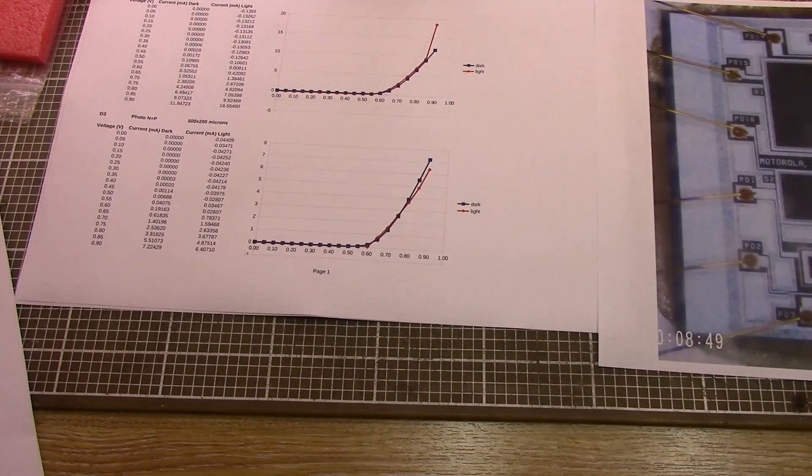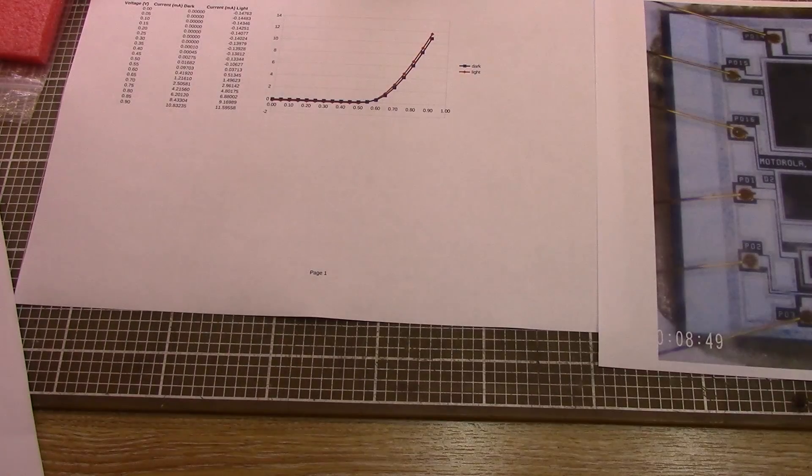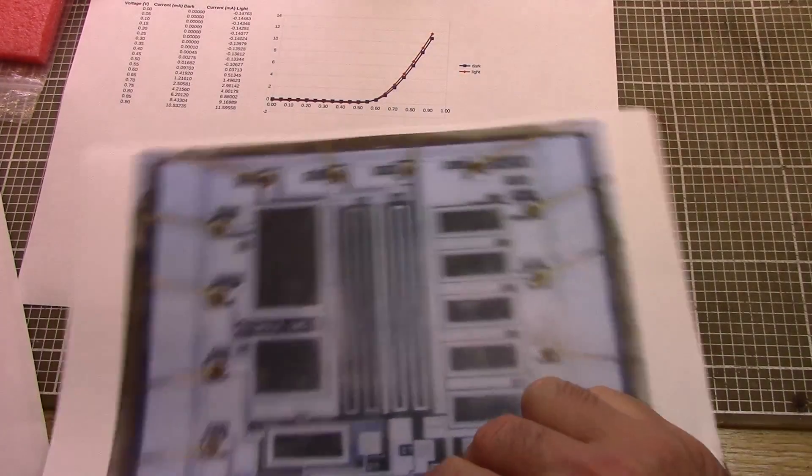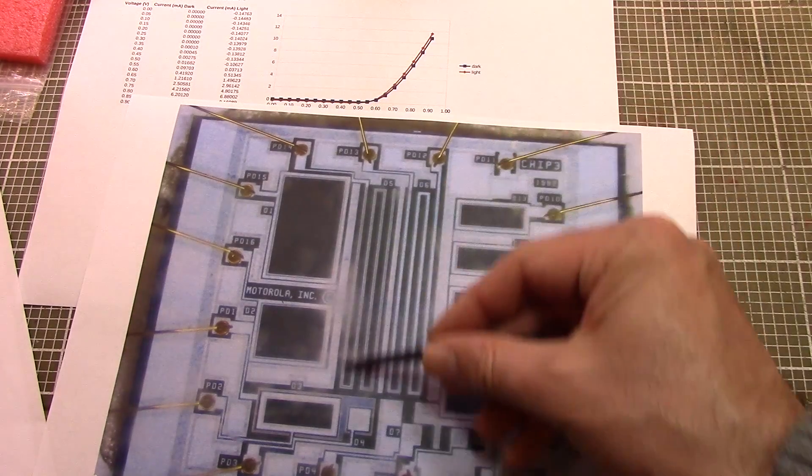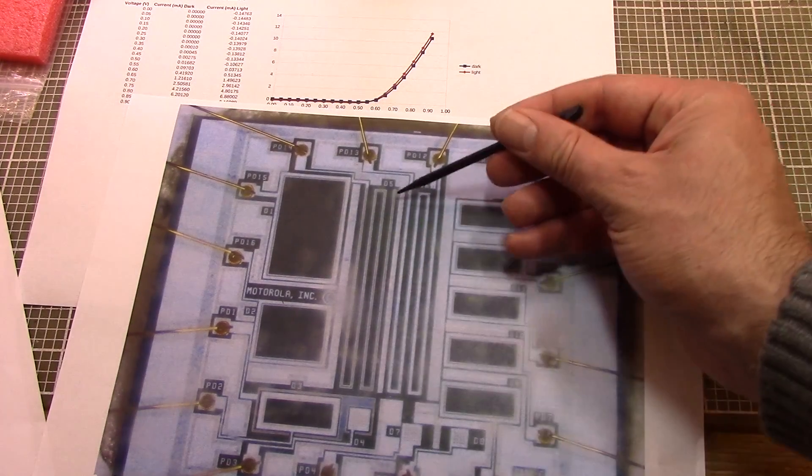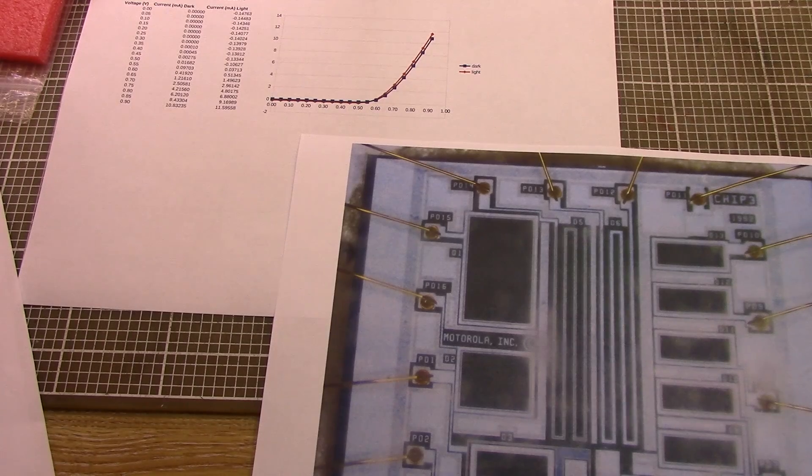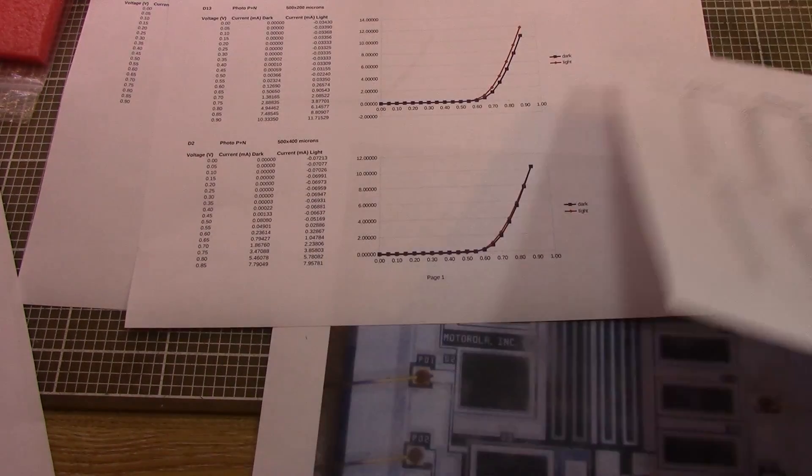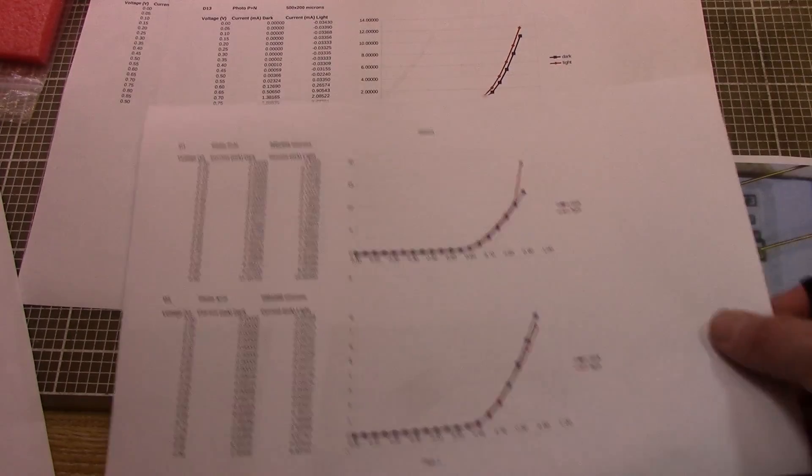The last one I did here was diode D5 which is this big long one that snakes around. This is one of the edge effect diodes. That's kind of the characteristics of those five different diodes. That's taken me hours to do and it wasn't much fun at all.